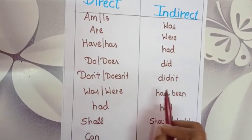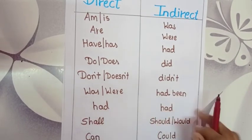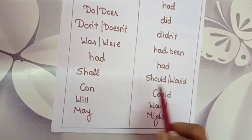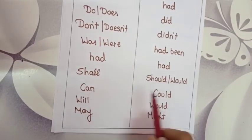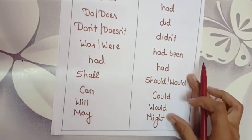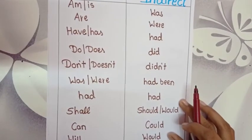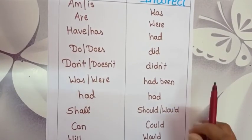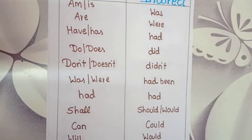'Was' or 'were' should be converted to 'had been'. 'Had' should be kept as it is. 'Shall' should be converted to 'should' or 'would'. 'Can' should be converted to 'could'. 'Will' should be converted to 'would'. And 'may' should be converted to 'might'. These respective changes should be made. Be perfect with these changes so that you can convert the sentences easily.